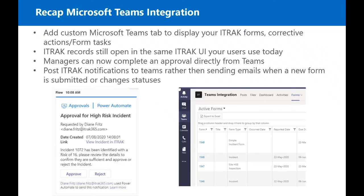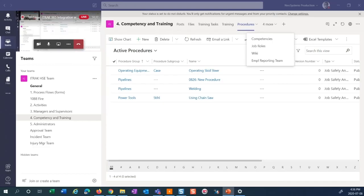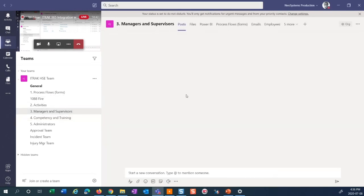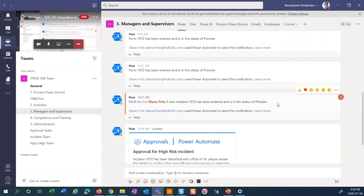Quick recap: you can add custom Microsoft Teams tabs to display your iTrack forms, corrective actions, and form tasks. iTrack records still open the same iTrack UI your users see today, so there's nothing new for them to learn. Managers can now complete an approval directly from Teams — approve or reject — which is something we've wanted for a long time. You can also post iTrack notifications to Teams rather than sending emails when a new form is submitted or changes status, with the option to send to a user or to a team channel.